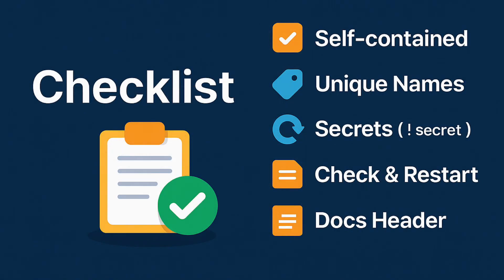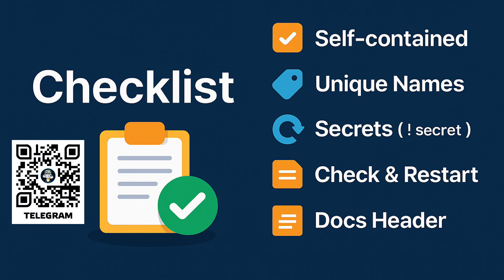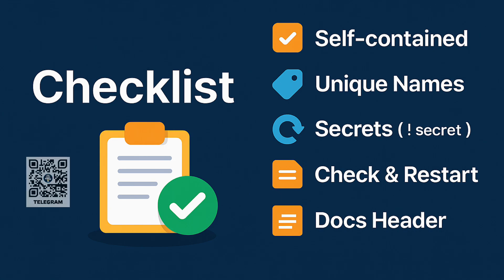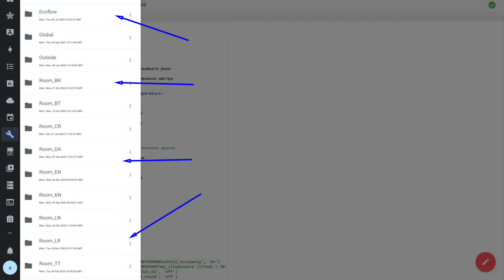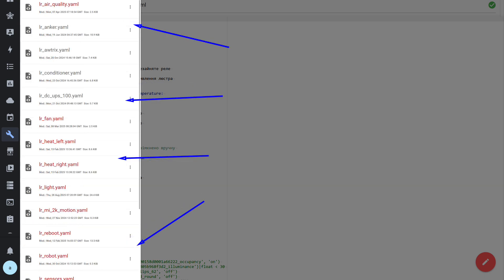Checklist before adding or publishing a package. Self-sufficiency: everything needed for the case is declared inside the package. Names: unique and with a meaningful prefix. Secrets: tokens, passwords, and paths go through secrets.yaml. Configuration check, then restart of integrations or the core. Documentation: at the top of the package leave a short block of comments covering purpose, inputs/outputs, and dependencies. For folder structure, I use folders named after rooms or by task direction, with package files inside named according to the case described in them — this makes it quick to find the right one, both for making changes and for using as a template for a similar case.